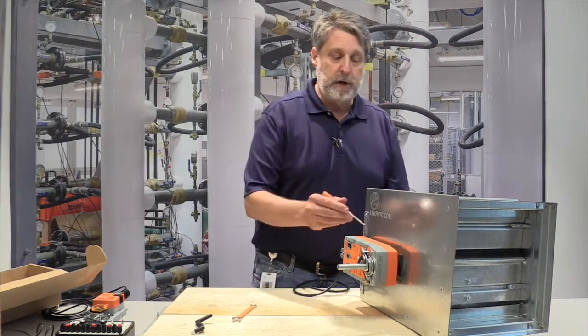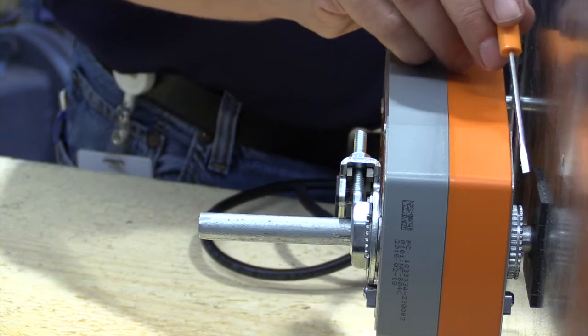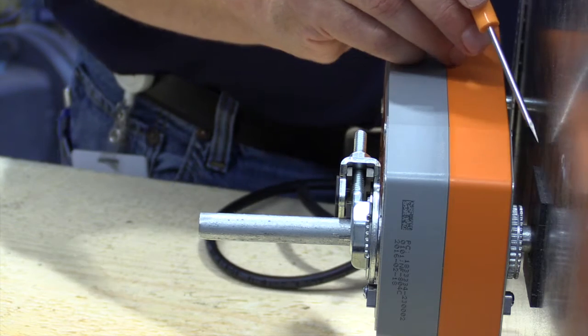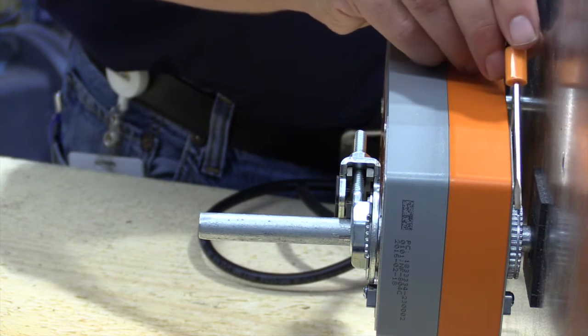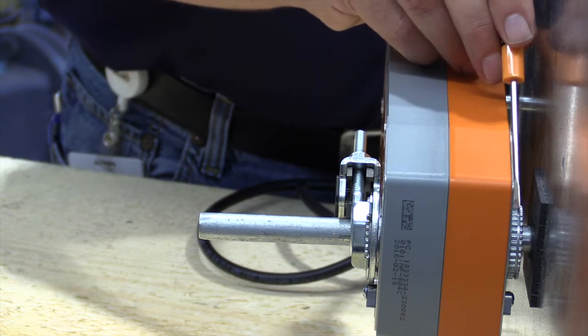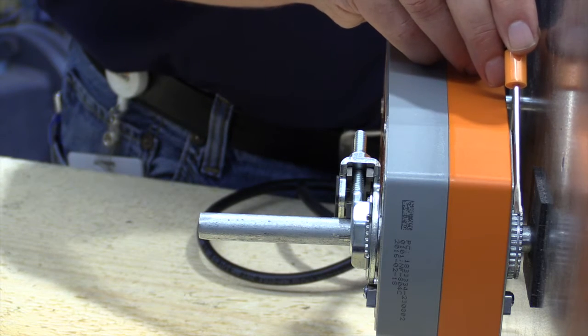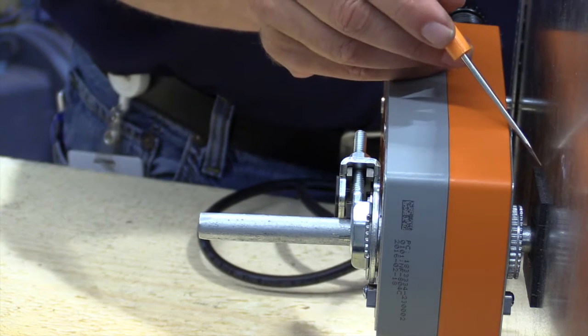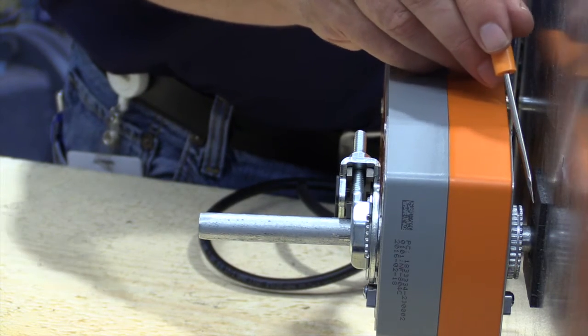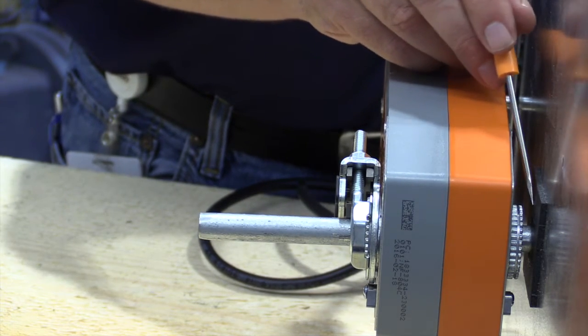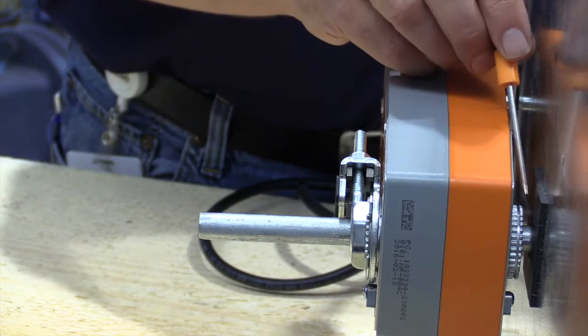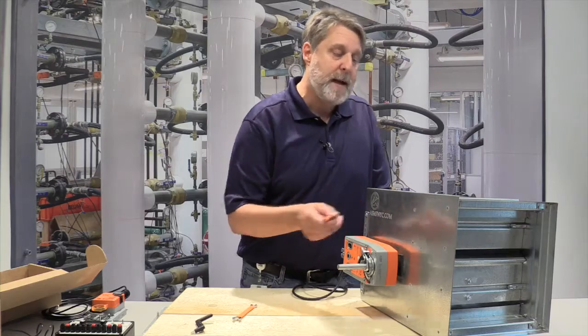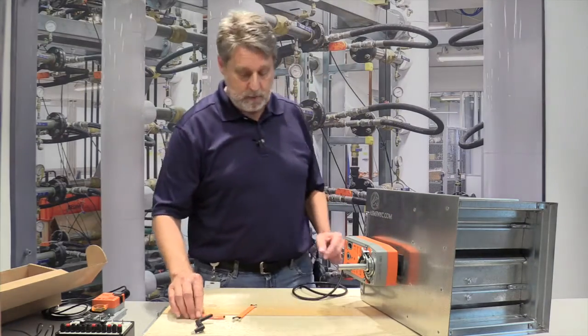Now, I want you to notice when I mounted the actuator, I left some space between the back of the actuator and the face of the ductwork. As this actuator is moving, the splines in the back are also moving and you would end up chewing up the face of the ductwork. In this case, there's a seal around the shaft and you would ruin that gasket. We always ask that you leave a little bit of space.